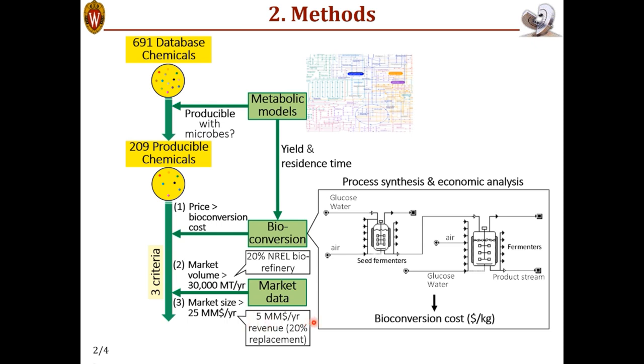And also we assume that we can replace the product currently sold on the market because our bioprocess has cost or environmental advantages. But we can replace no more than 20% of the current market. That's our assumption. So this translates to $25 million dollar market size. This way, we identify 45 candidate chemicals that satisfy all the three criteria.